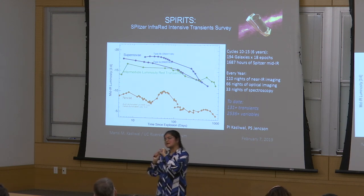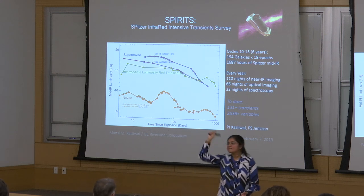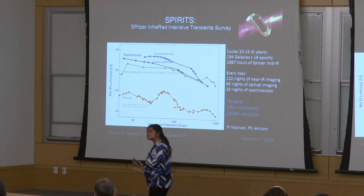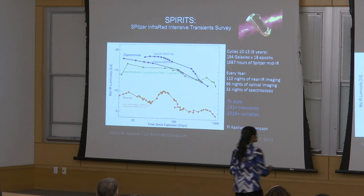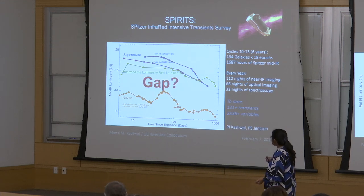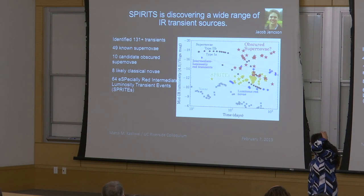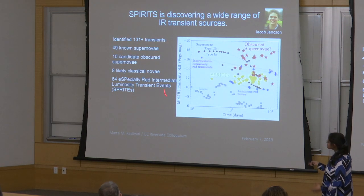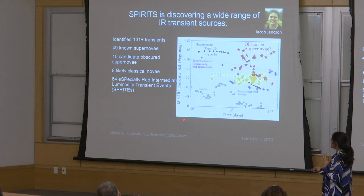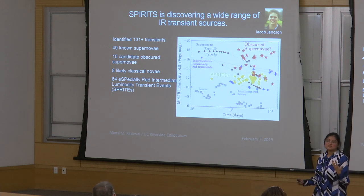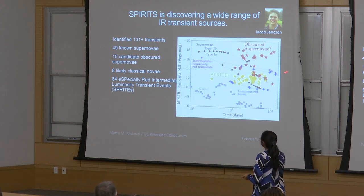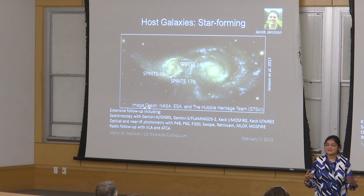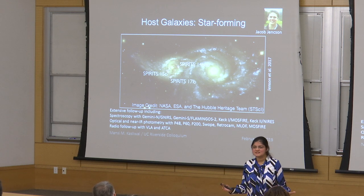Spitzer is in space so it doesn't have the glaring night-sky background problem of ground-based observatories — a huge advantage — but it only has a 5 arcminute × 5 arcminute camera: a pencil beam. The best we could do was look at individual galaxies. We picked 200 of the nearest and brightest galaxies and started imaging them repeatedly. This was the PhD topic of my first graduate student, Jacob Jencson. We've identified more than 131 infrared transients. Plotting them on a luminosity versus timescale diagram — 10 to 1,000 days — there's a zoo of explosions we didn't know about previously in the infrared.